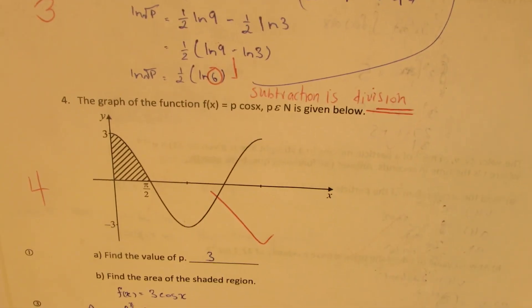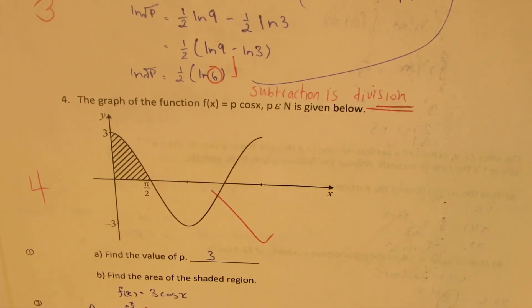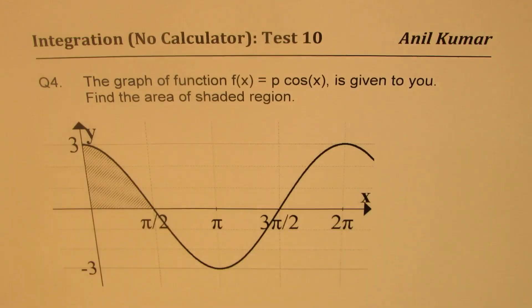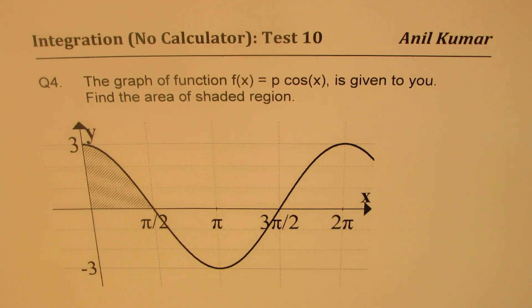So here is question number four, which we are going to now solve. The question here is: the graph of function f of x equals to p·cos x is given to you. Find the area of the shaded region.